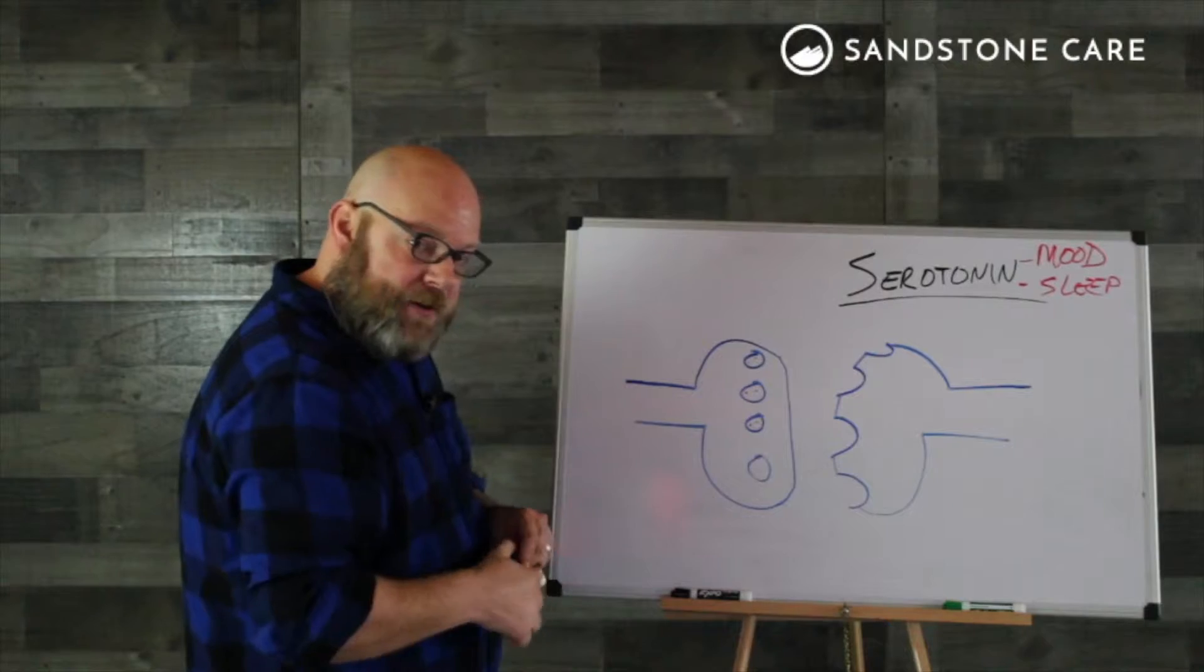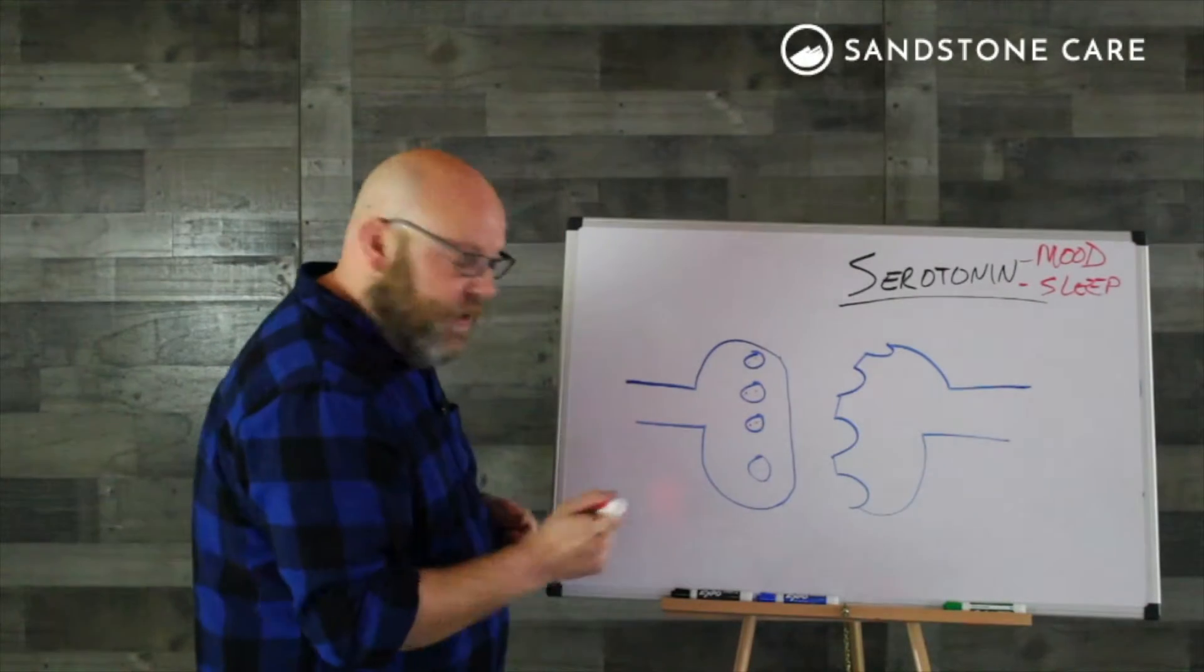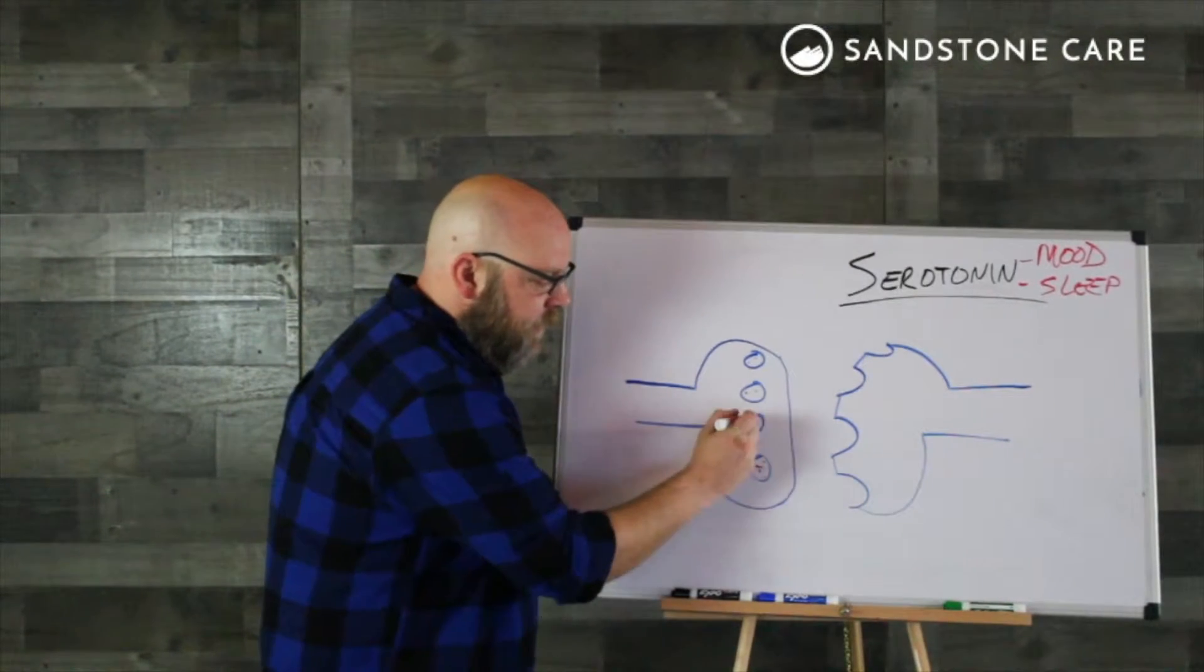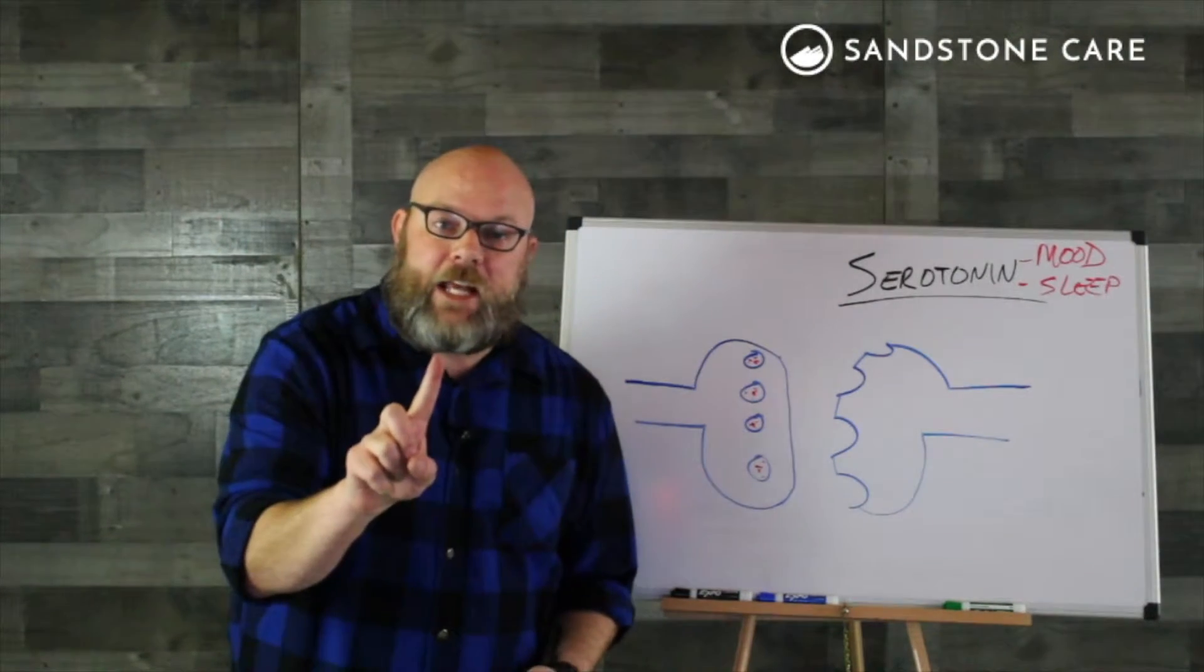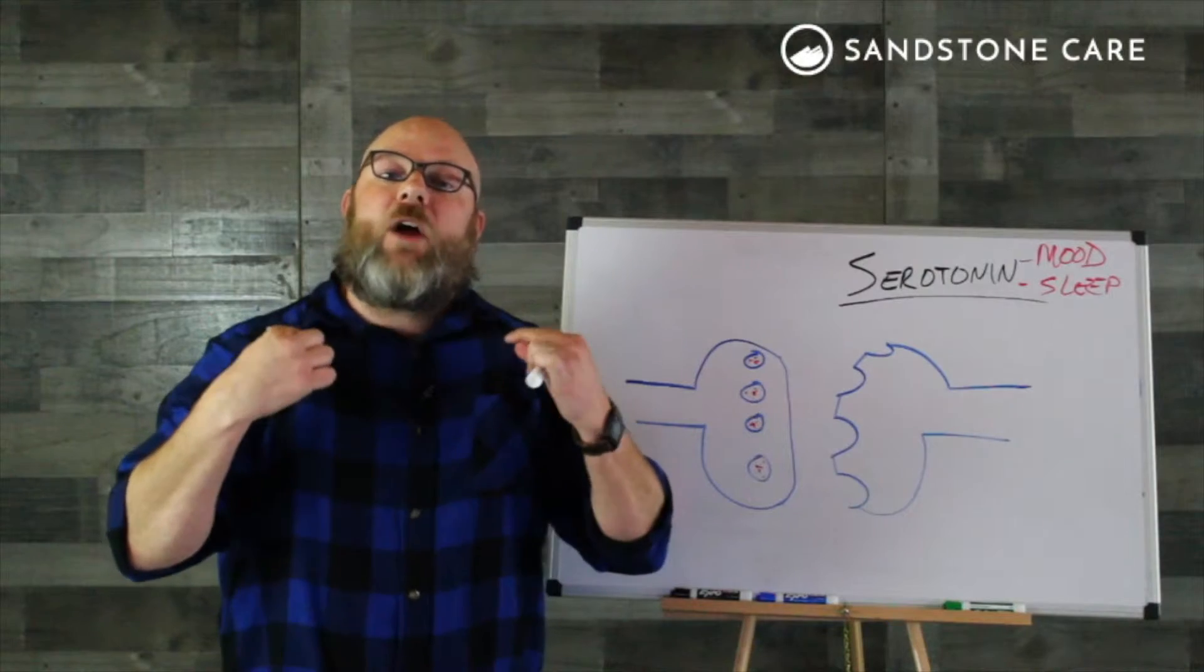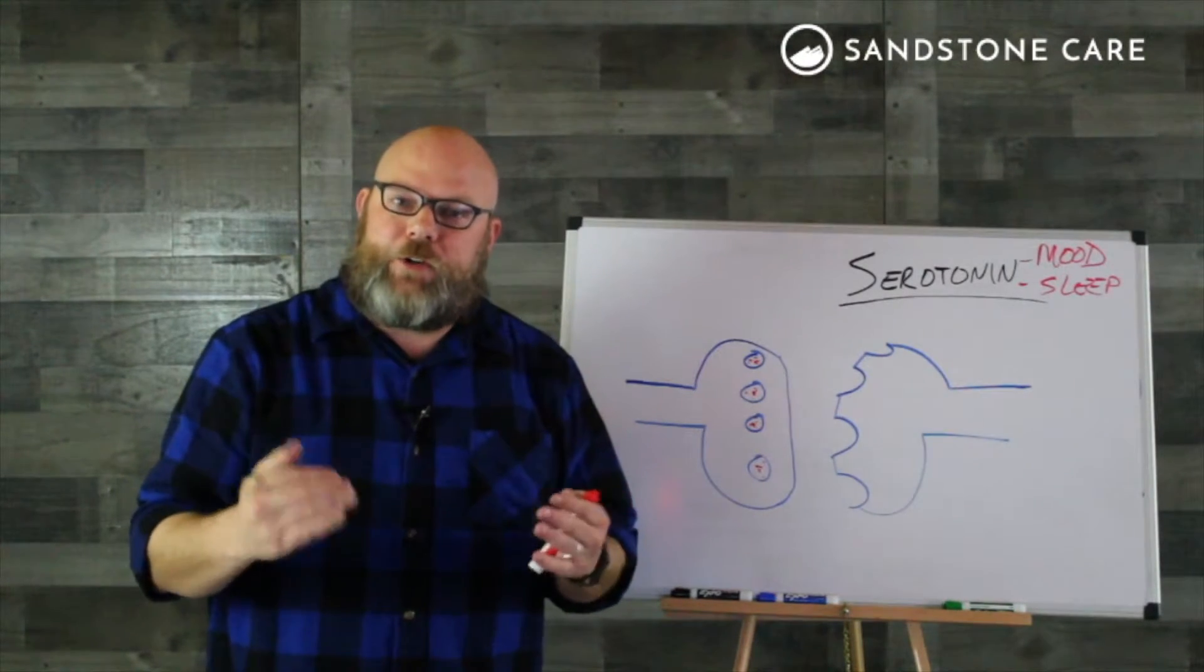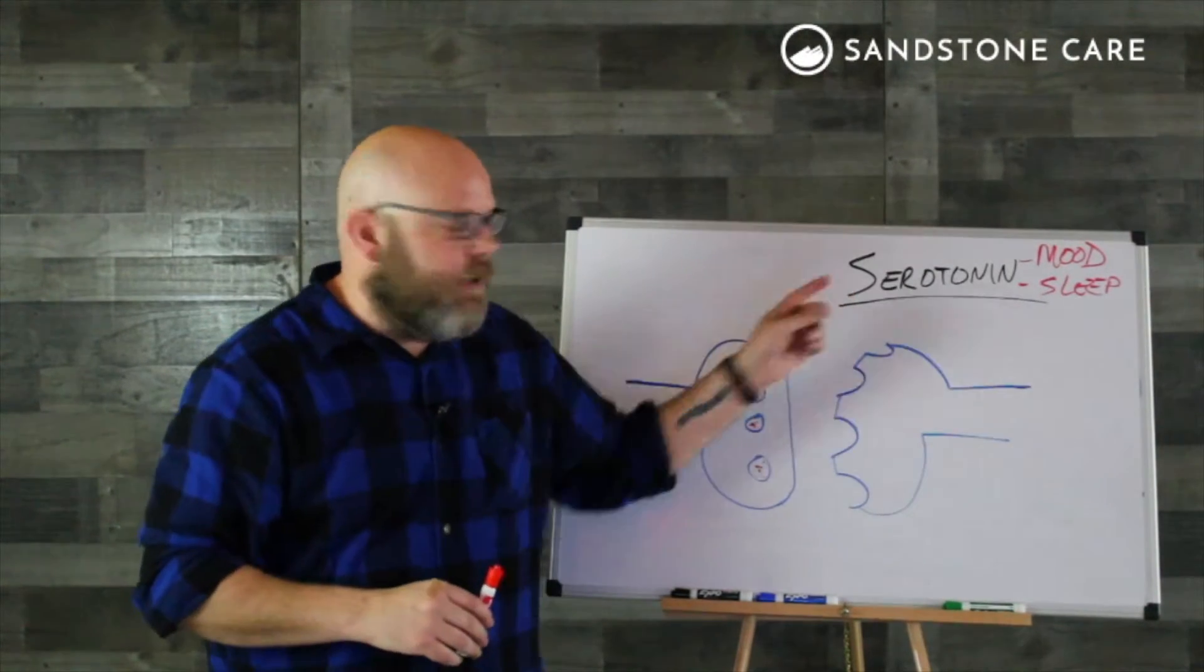So, in the first episode, we learned the three ways in which all drugs are similar. One, in order to get into the brain, it has to dress up as a natural neurotransmitter. Today, we're talking about serotonin.